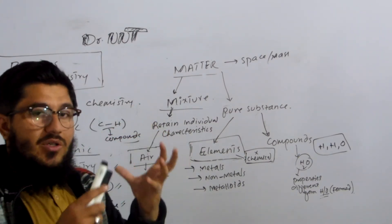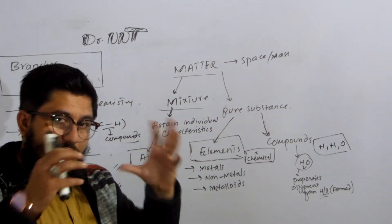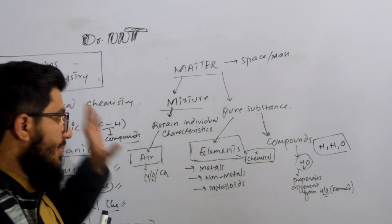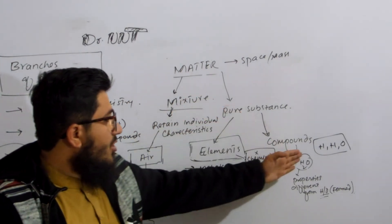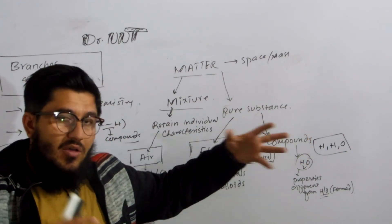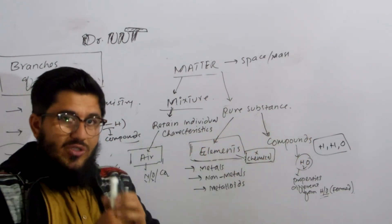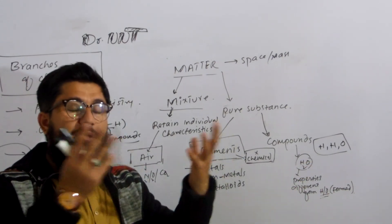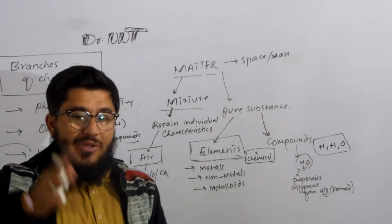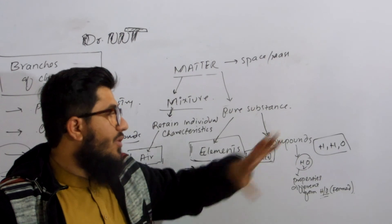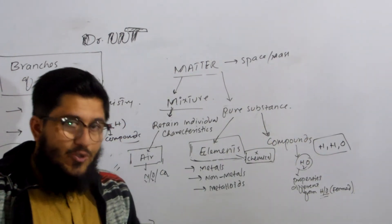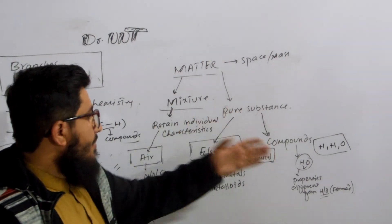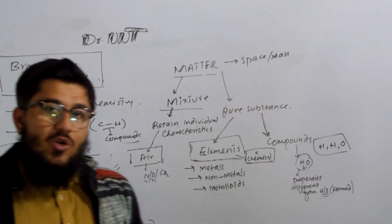In a mixture, every component shows its own specific properties. For example, if you take hydrogen and oxygen gases and fuse them together, you make water, and that water has its own unique properties different from hydrogen and oxygen — that is why it is a compound, not a mixture. Hope you got the differences among these terms: compounds, elements, and mixtures. Thank you.